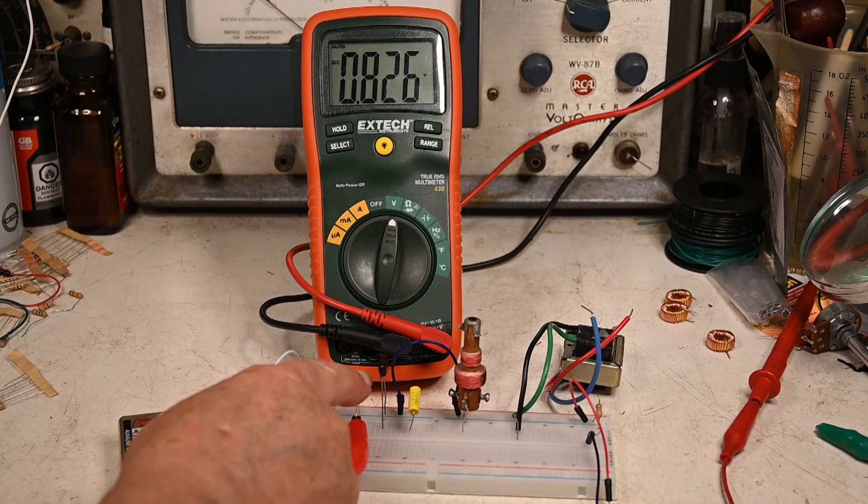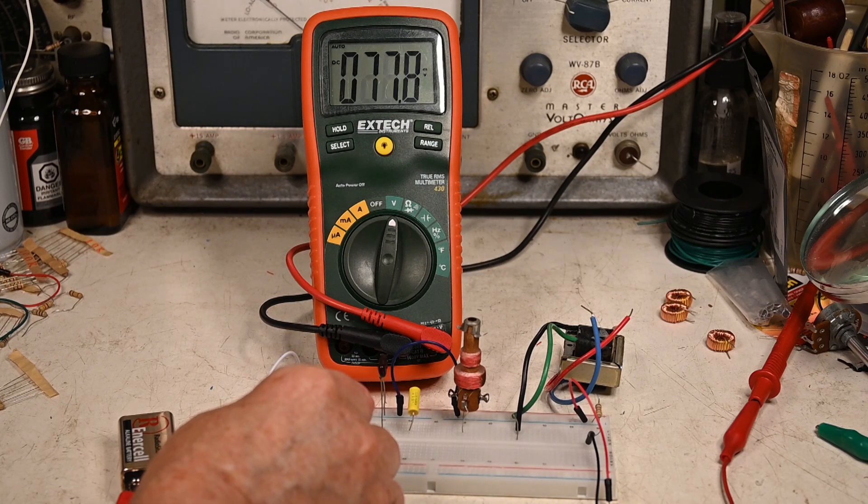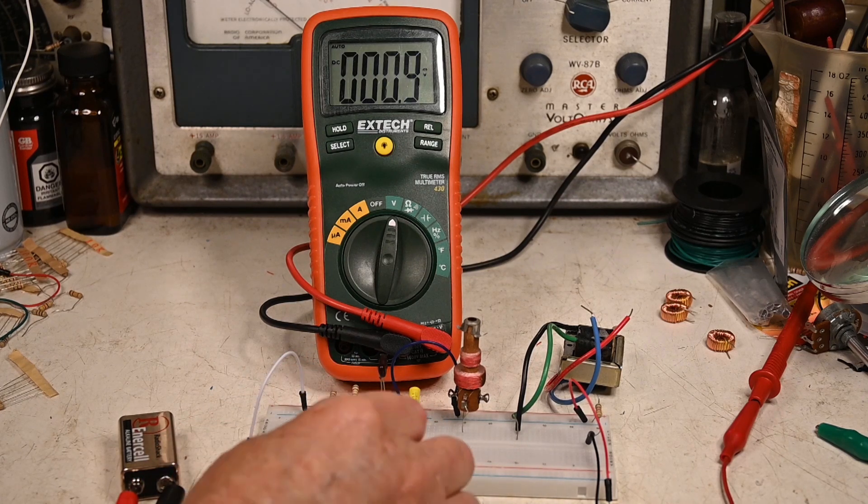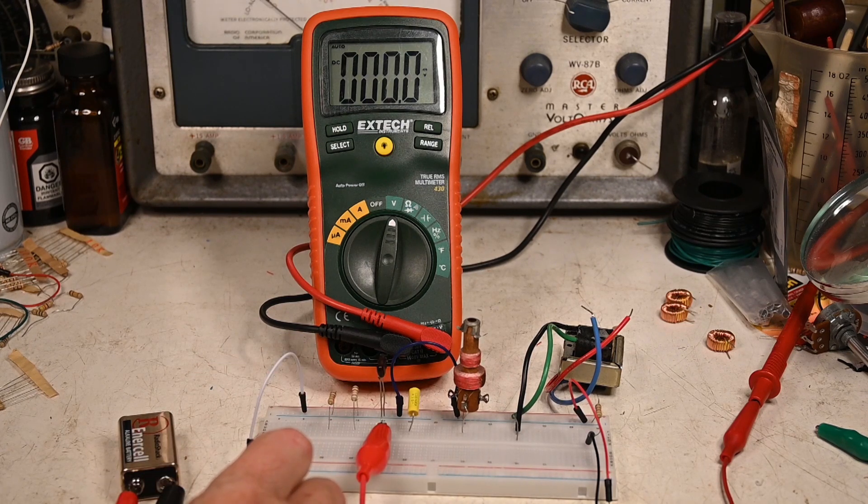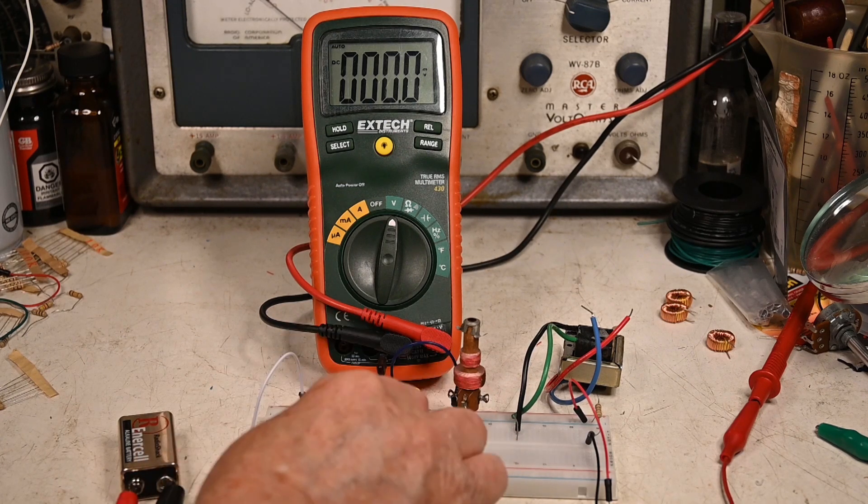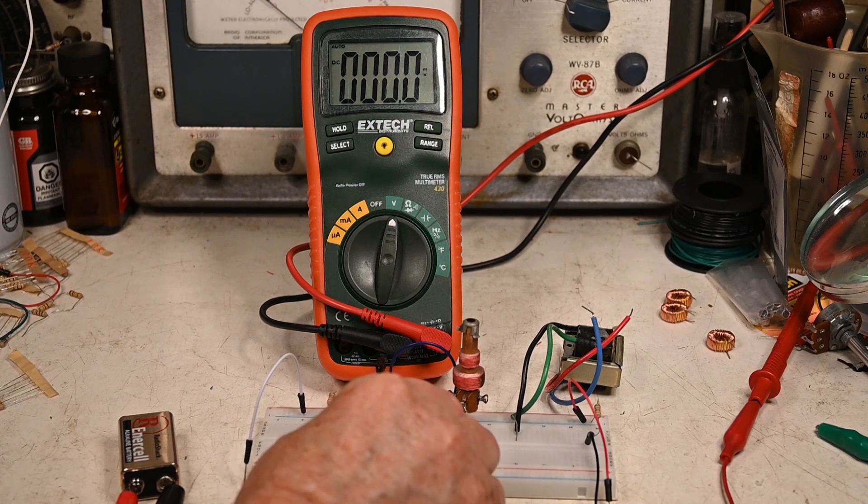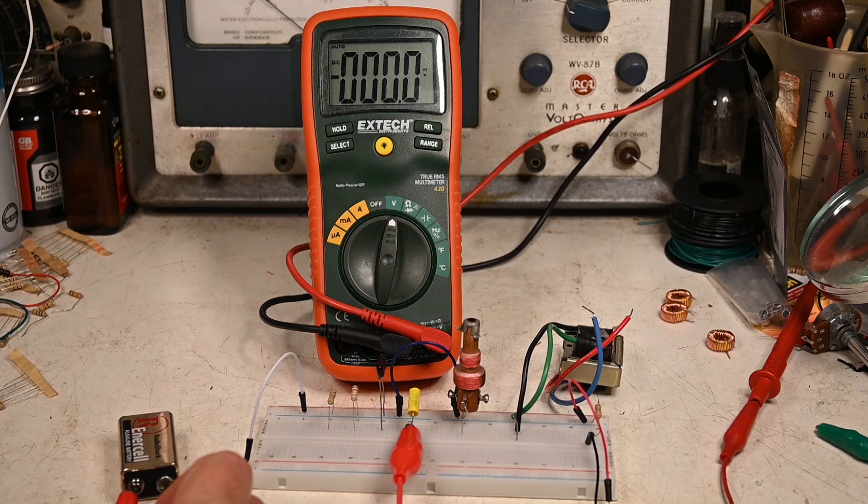Here's our first capacitor. That's 500 picofarad. It's blocking DC, can't read through that. Here's our .01. It's blocking DC also, can't read through it.